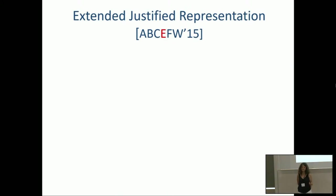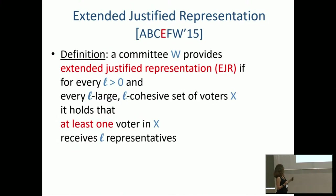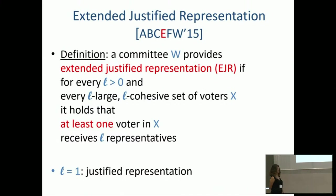That was in the same paper. After Marcus, Rupert, Vince, and I wrote to Haris and Toby, they graciously invited us to write a joint paper for AAAI, where we proposed Extended Justified Representation. We say the committee provides EJR if no bad situation occurs: there's no L-large, L-cohesive group where no member of that group gets L representatives. L-large means size at least L·N/K; L-cohesive means agrees on L candidates. For L=1, it collapses to JR.